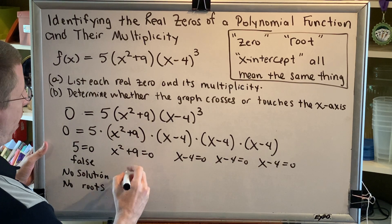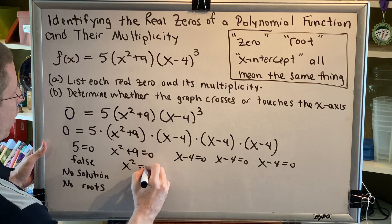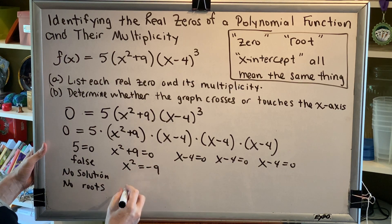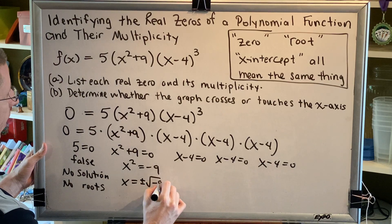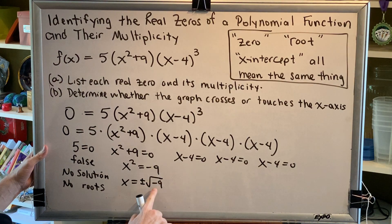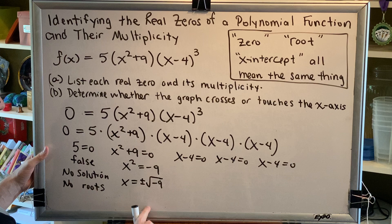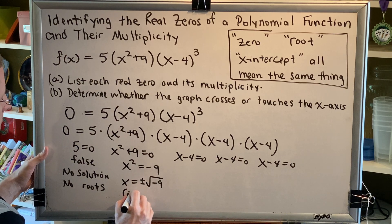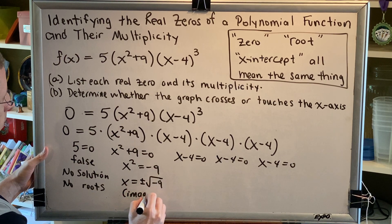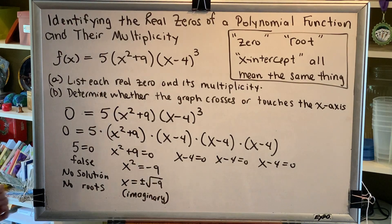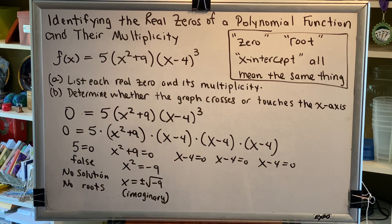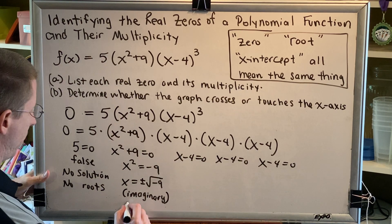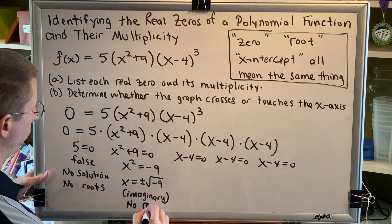Next, subtract 9 on both sides: x squared equals negative 9. By the square root property, x equals plus or minus the square root of negative 9. A square root of a negative is an imaginary number, which means it is not real. We are trying to find the real roots, the real zeros, the real numbers. For that reason, we say that this generates no real roots.